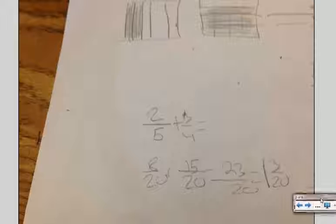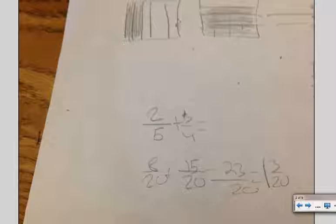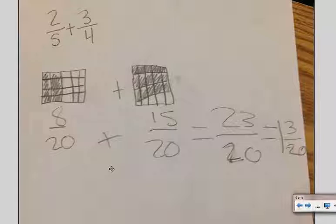When we look at this student's work, they've taken 2 fifths — they took a rectangle and split it into 5 parts and colored in 2. Then they took a different rectangle and split it into 4 parts and colored in 3. The key is to then take these 2 rectangles and cross them, and what that does is create like units of 20ths.